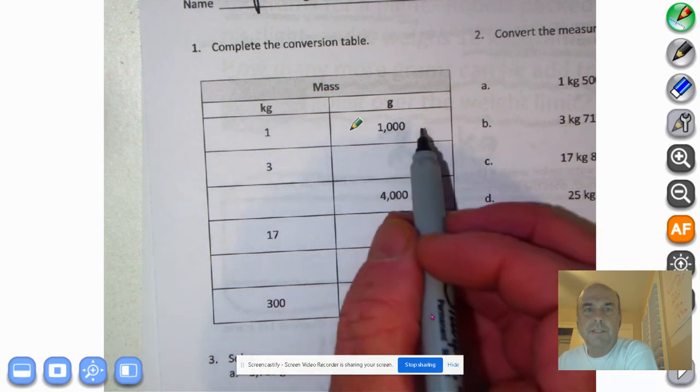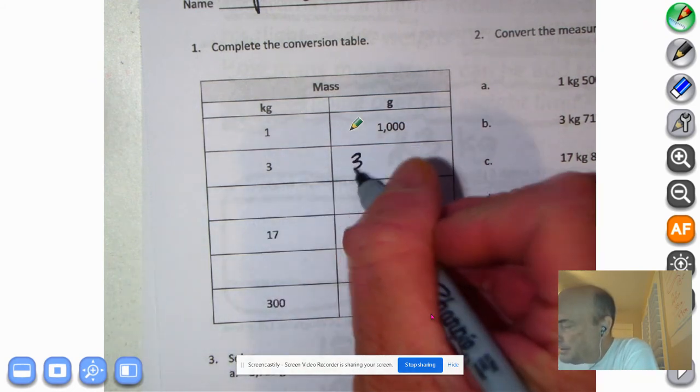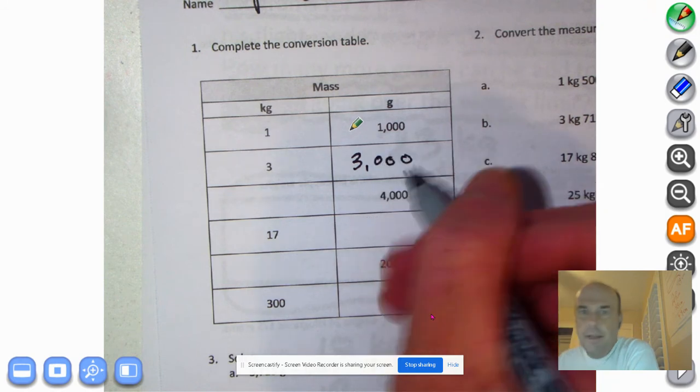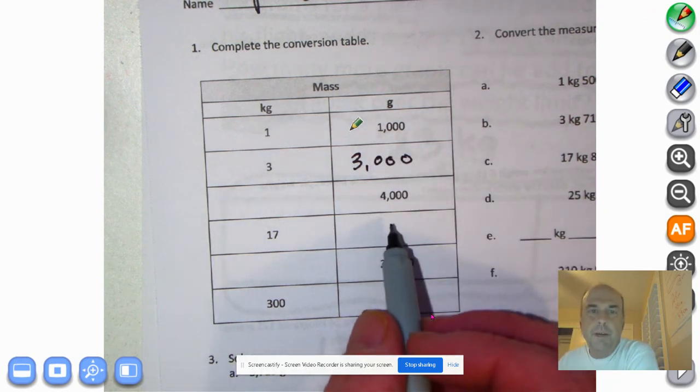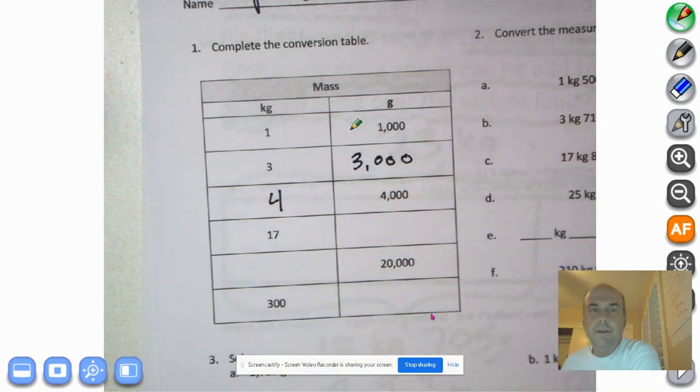It says complete the conversion table. I think you guys can do this, right? One kilogram equals 1,000 grams. Three kilograms equals 3,000. How about over here? 4,000 grams. What would it equal? Four kilograms. What I'd like you to do is pause this, fill the conversion table out, and then come on back.